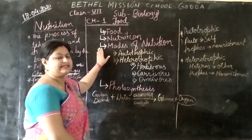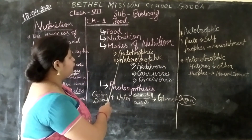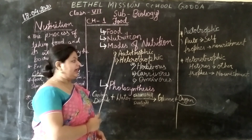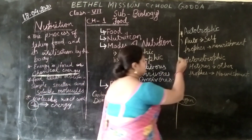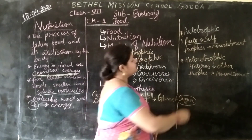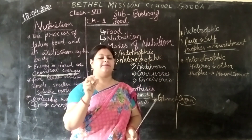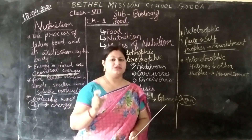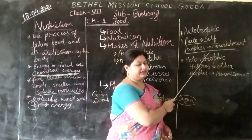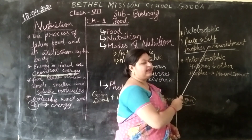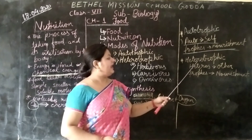The next topic is modes of nutrition. There are two types of nutrition: autotrophic and heterotrophic. Auto means self and trophic means nourishment. Autotrophic nutrition means the green plants perform the process of autotrophic nutrition to make their own food. They do not depend on any other organism for their nourishment — they depend on self. Autotrophs prepare their own food, utilize it, and get energy. Autotrophs can also be called producers.